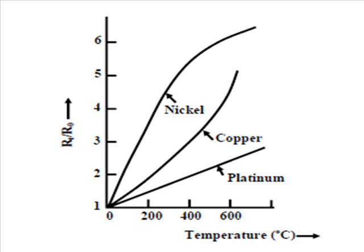In this graph we have represented resistance temperature characteristics of different metals used in RTD. Here we have plotted the ratio RT by R0 along the y-axis and temperature along x-axis. This straight line represents a characteristic for platinum,